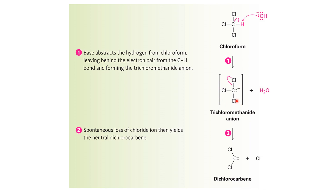This carbanion can be rearranged by donating its electron to the chloride, and the products are chloride ion and a carbene species. So as a summary, if you treat chloroform with a strong base, it can form CCl2 carbene.